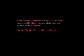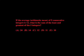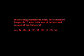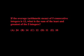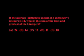Now let's apply this strategy to a real GRE question. If the average arithmetic mean of 5 consecutive integers is 12, what is the sum of the least and greatest of the 5 integers?